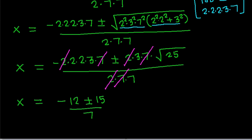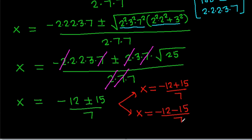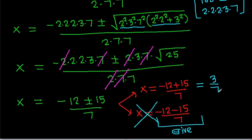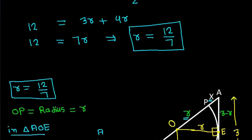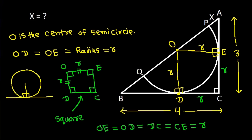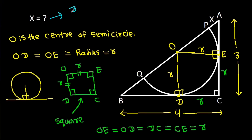So X equals minus 12 plus 15 by 7, or X equals minus 12 minus 15 by 7. The second solution is negative, so it is not possible. From the first solution, X equals 3 by 7. Therefore X is 3 by 7.